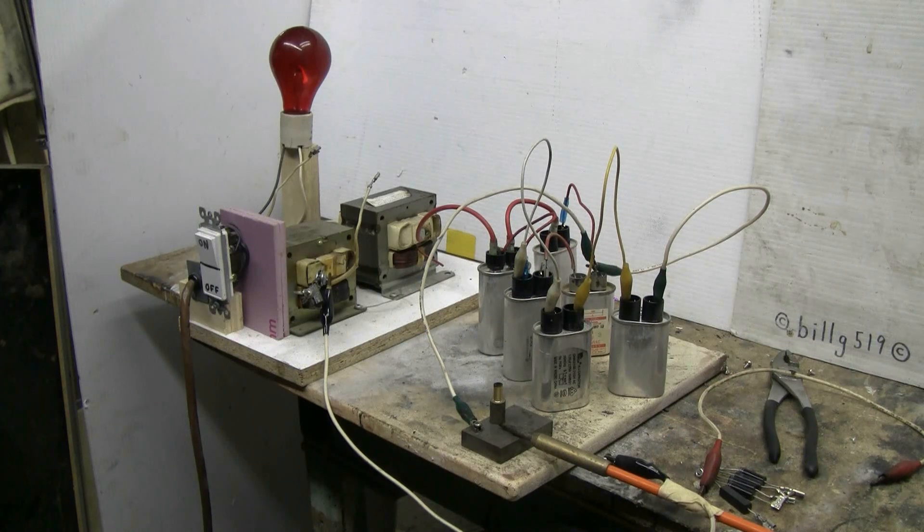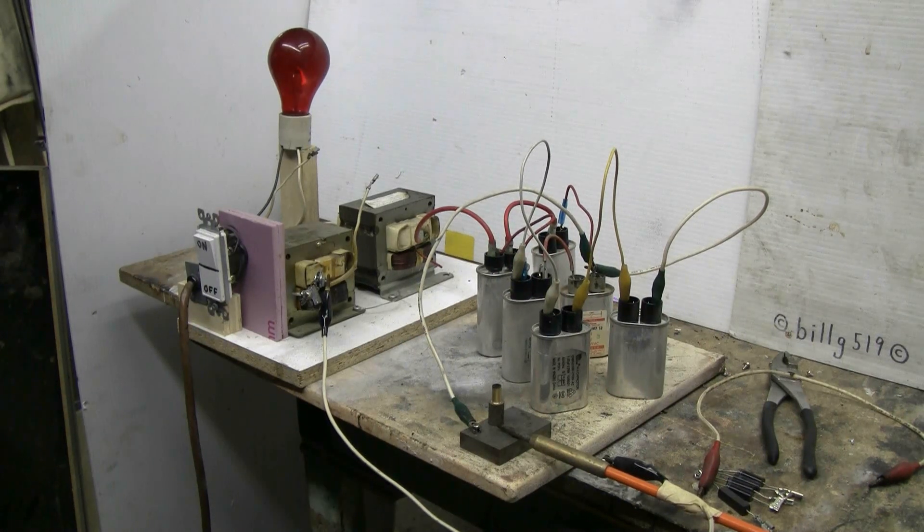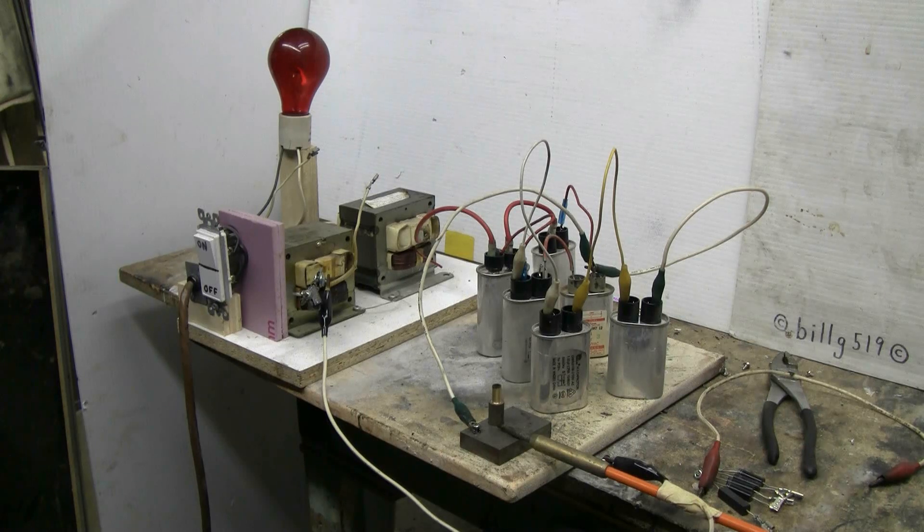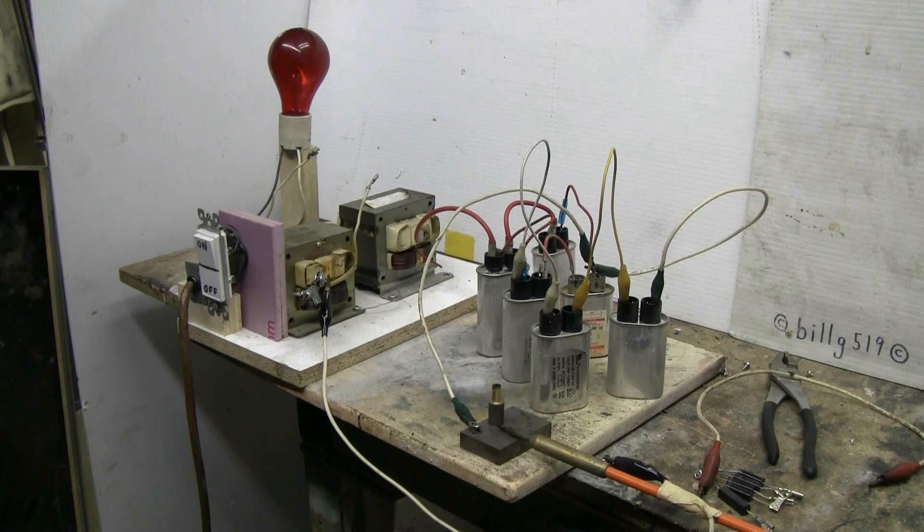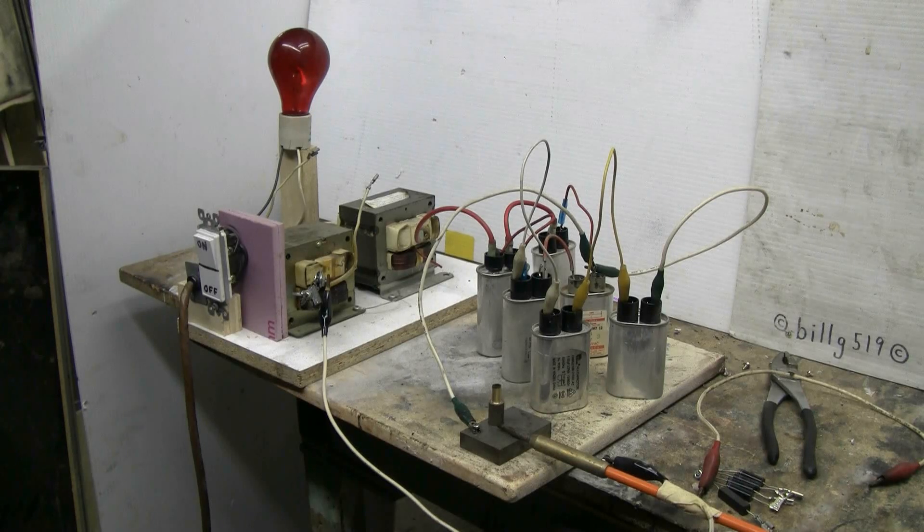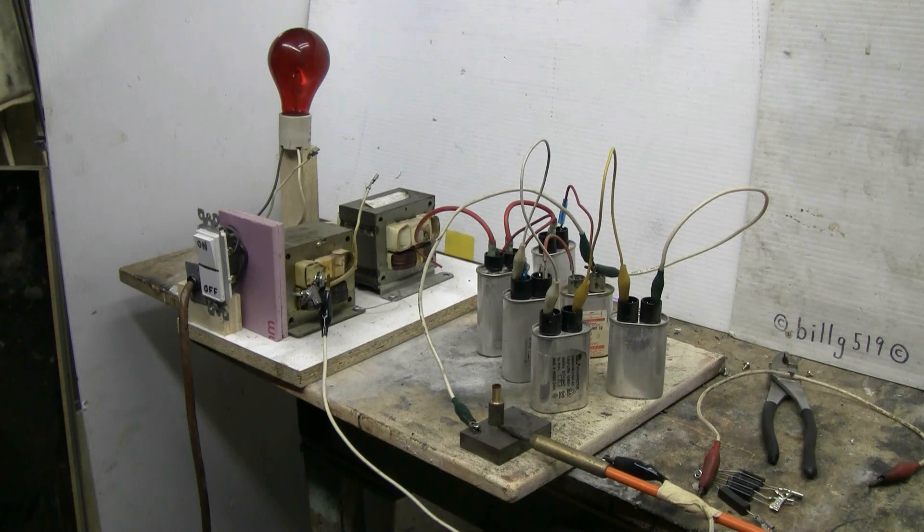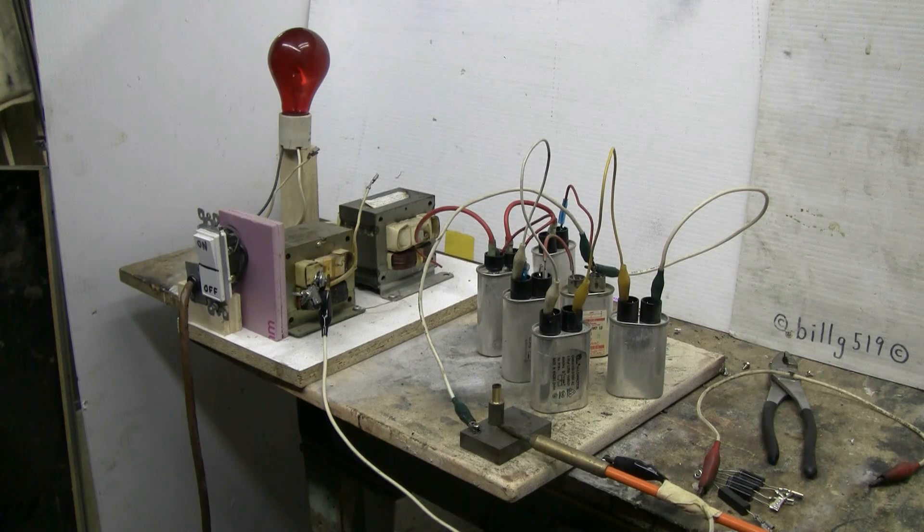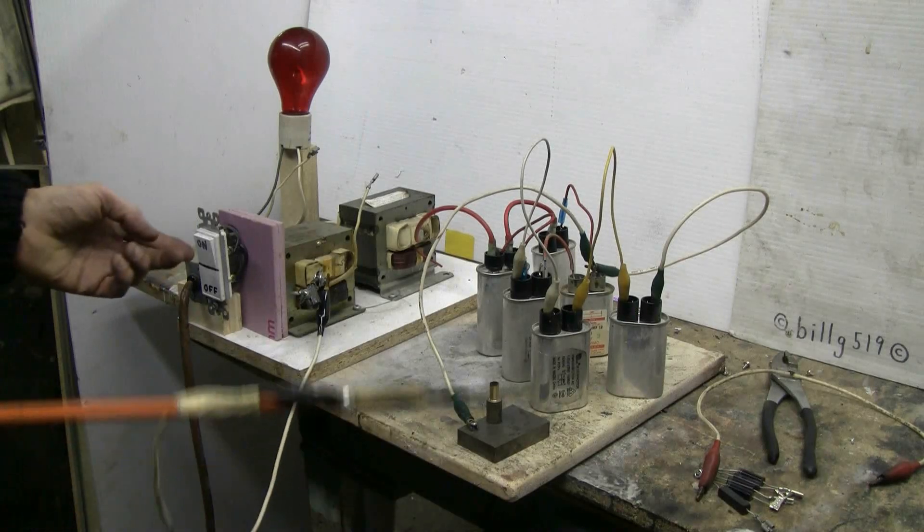For this last setup, I've taken another pair of microwave oven caps, put the two of them in series, and then put these two in parallel with the other sets of capacitors. Let's see what this does. It'll be up to about a microfarad and a half at 4kVAC now.